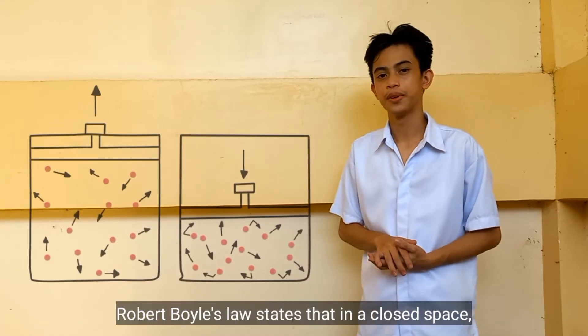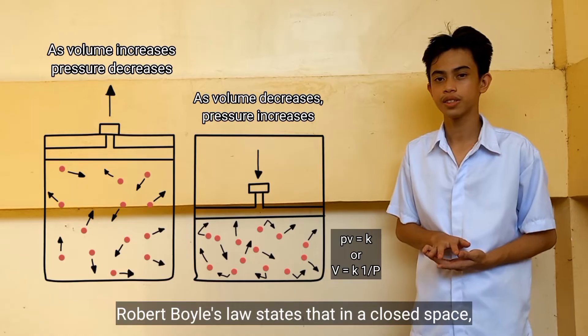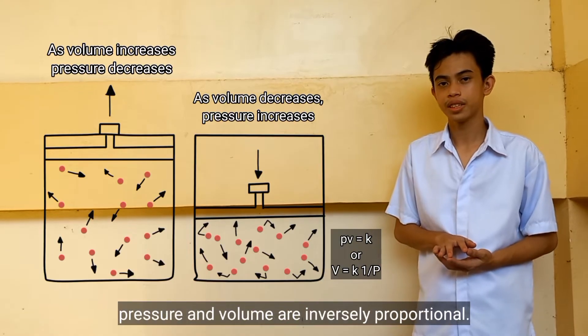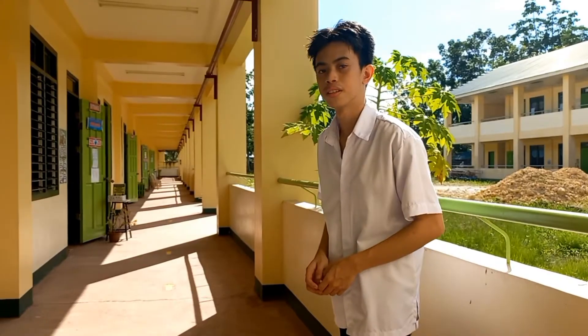Robert Boyle's Law states that in a closed space, pressure and volume are inversely proportional.